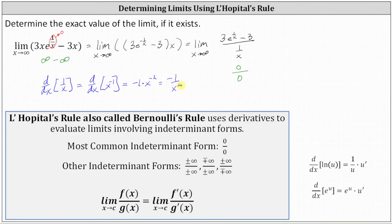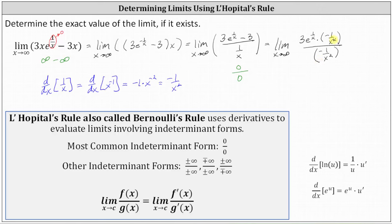Now let's apply L'Hôpital's rule to help us determine the limit. This limit is equal to the limit as x approaches infinity of the derivative of the numerator divided by the derivative of the denominator. The derivative of three e to the power of one divided by x equals three times e to the power of one divided by x, times the derivative of one divided by x, which is negative one divided by x squared, minus the derivative of three, which is zero. This is divided by the derivative of one divided by x, which again is negative one divided by x squared. Notice we have a common factor of negative one divided by x squared between the numerator and denominator.